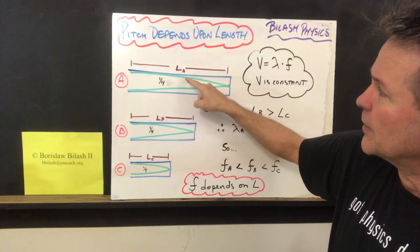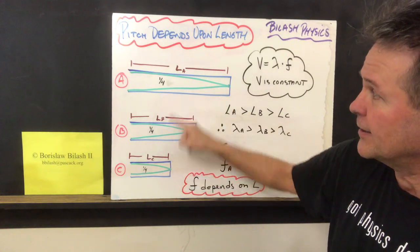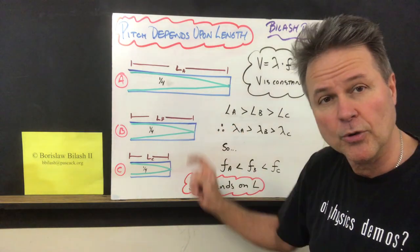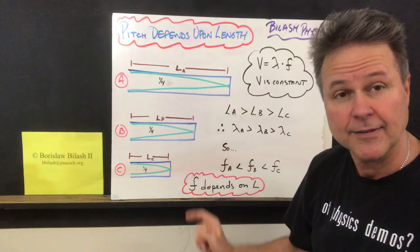What we see here is we go from a large length to a small length. The size of the wave actually decreases and it corresponds to whatever the length of the tube is.